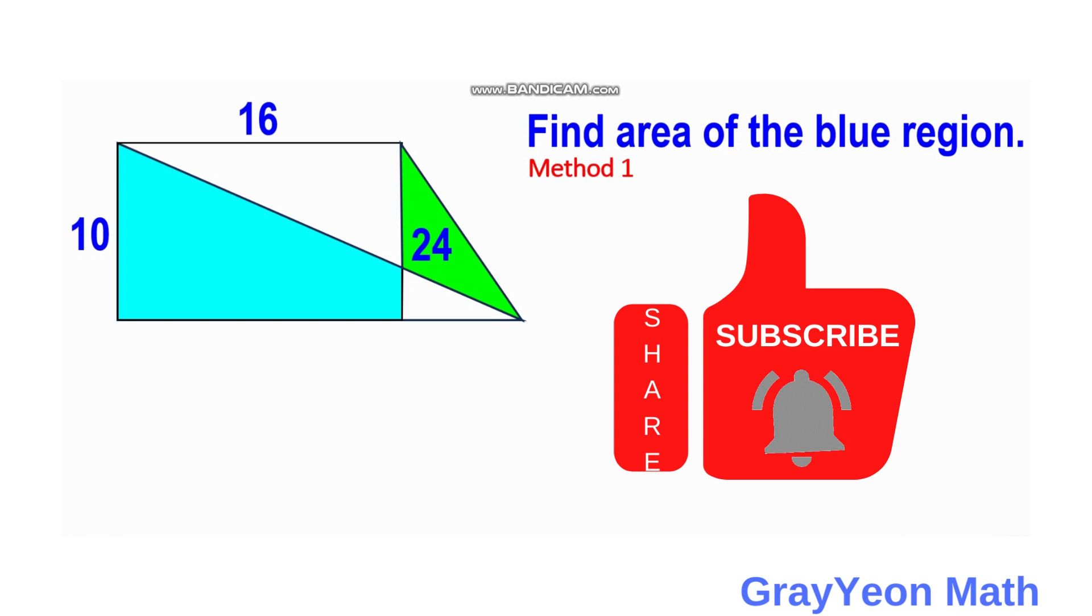We have a rectangle, and inside this rectangle is divided into a blue trapezoid and a white right triangle. There's another green triangle with area 24 square units outside the rectangle, and a small white right triangle below the green triangle. We are required to find the area of the blue region.